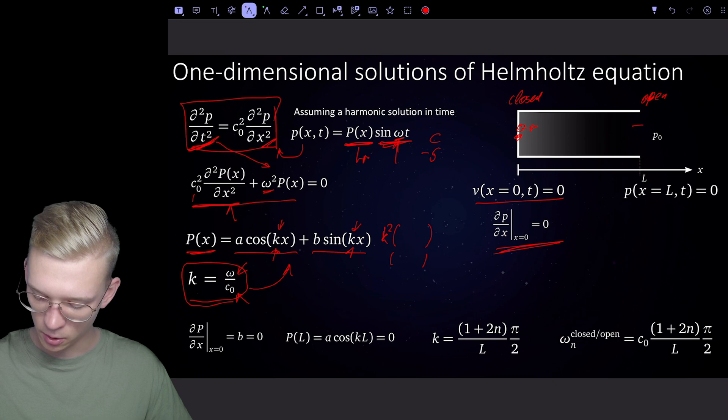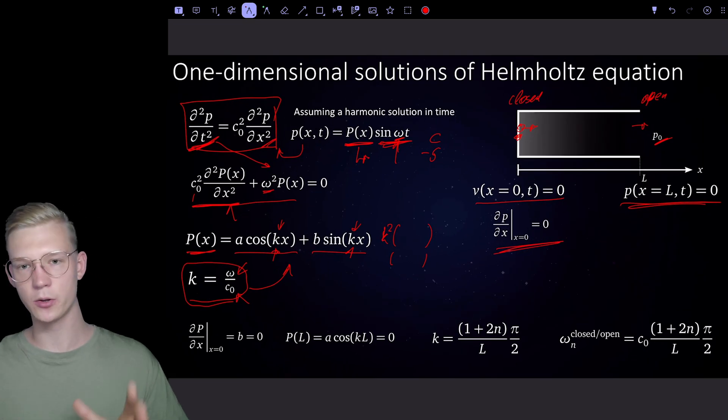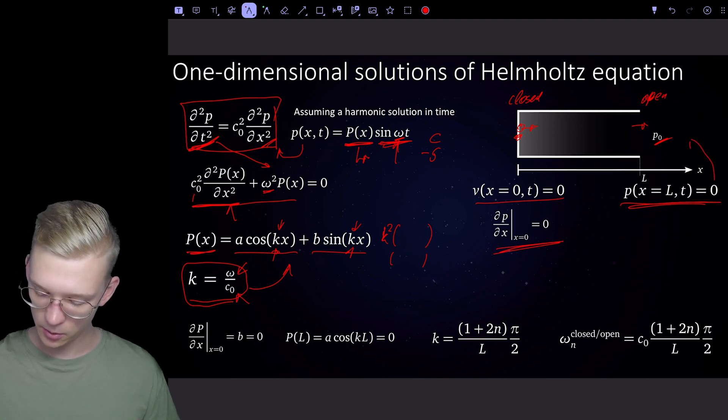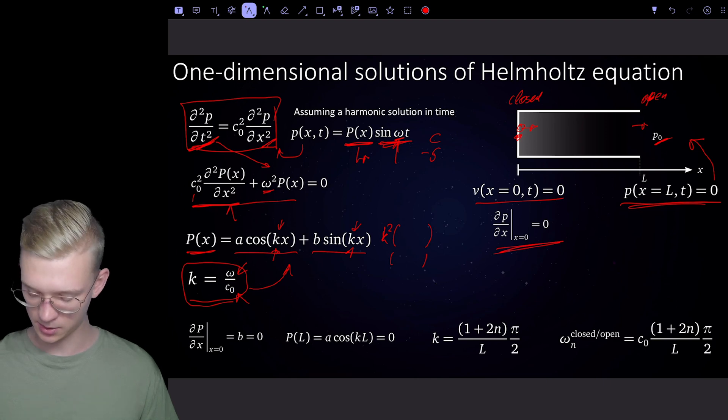At the open end of our tube we say that the pressure is zero. Why do we not say that our pressure is p0? Well because we are now solving for the perturbation of our system and we just say we can add equal pressure everywhere. So we're solving for pressure equal to zero at the open end.